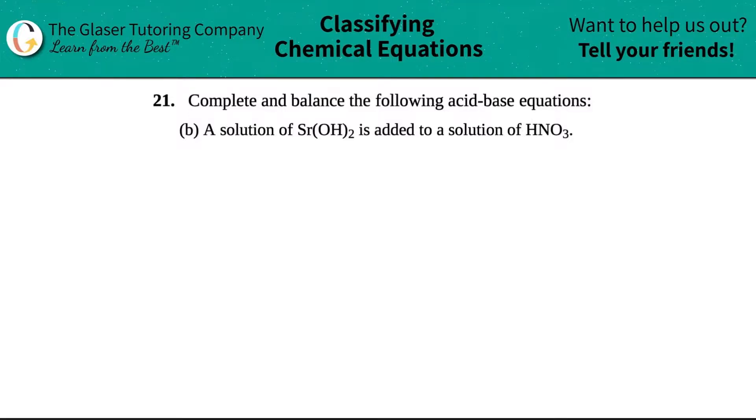Number 21, complete and balance the following acid-base equations. We have letter B. So we have a solution of strontium hydroxide, Sr(OH)₂, is added, so literally addition, to a solution of nitric acid, HNO₃.